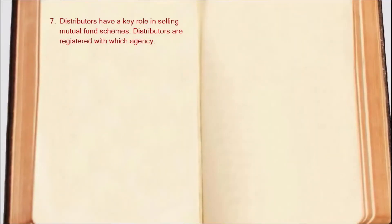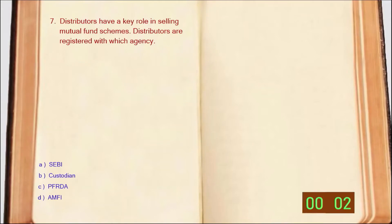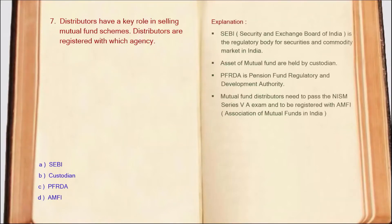Next question: Distributors have a key role in selling mutual fund schemes. Distributors are registered with which agency? SEBI is the regulatory body for securities and commodity markets in India. PFRDA is the regulatory body of pension funds. Mutual fund distributors need to pass the NISM 5A exam. And AMFI registers the distributors. So the correct answer is Option D: AMFI.